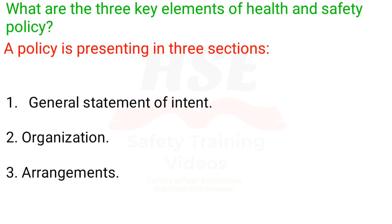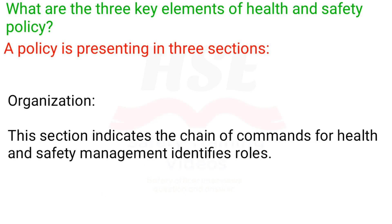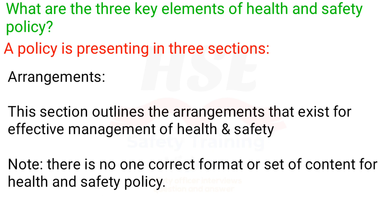What are the three key elements of health and safety policy? A policy is presented in three sections: 1. General statement of intent. 2. Organization. 3. Arrangements. The general statement of intent states the organization's philosophy in relation to management of health and safety. The organization section indicates the chain of command for health and safety management and identifies roles. The arrangements section outlines the arrangements that exist for effective management of health and safety.